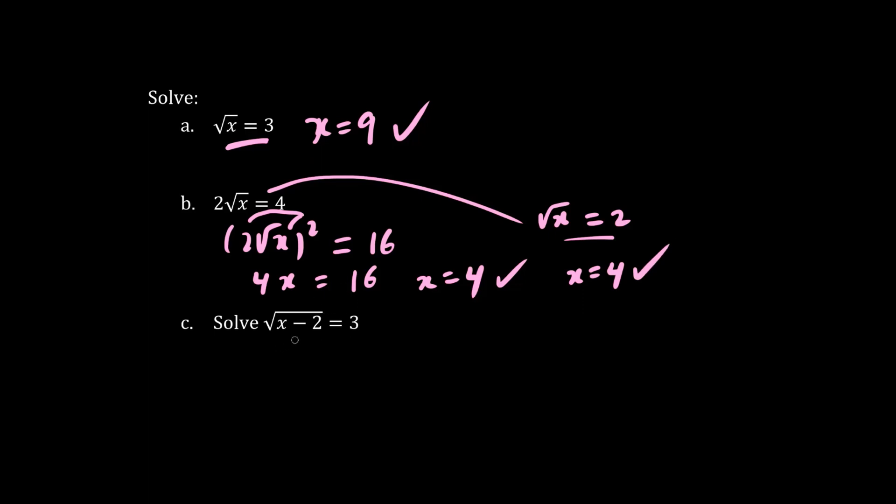Next, let's solve x by squaring both sides again. Then, we have x minus 2 equals 3 squared, which is 9. We add 2 to both sides, so we have x equals 9 plus 2, which is 11.